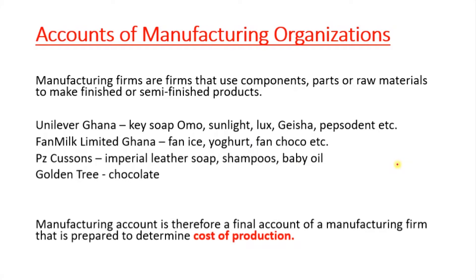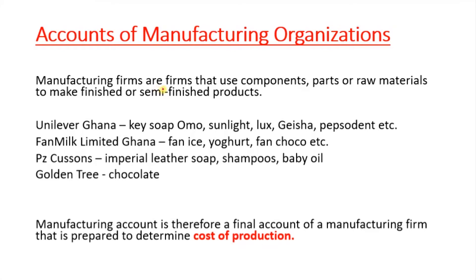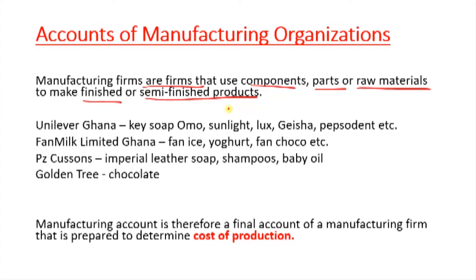First of all, the word manufacturing means to transform. What are you transforming? Raw materials into finished or semi-finished products. Any firm that participates in transforming raw materials into finished or semi-finished products could be called a manufacturing firm. Manufacturing firms are firms that use component parts or raw materials to make finished or semi-finished products. Semi-finished because the production process has not yet been completed.